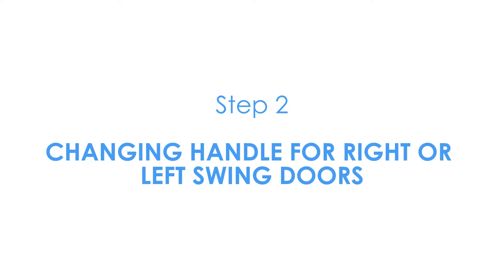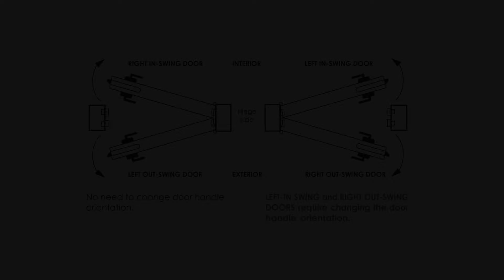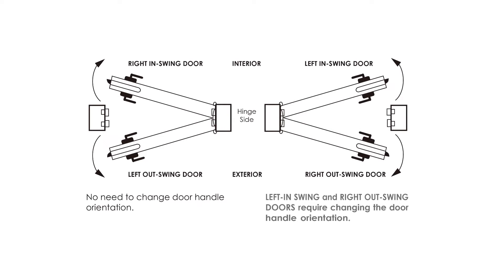Step 2: Changing handle for right or left swing doors. The lock ships with handle default for right in-swing or left out-swing door. Check this diagram if you are unsure of your door orientation.